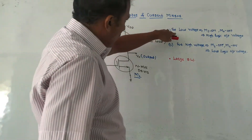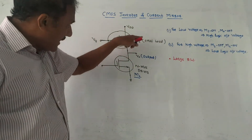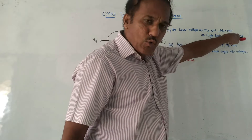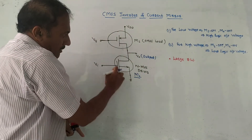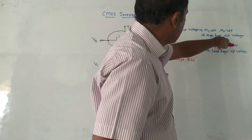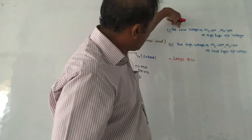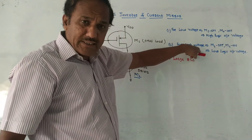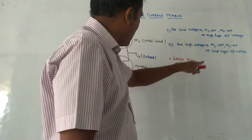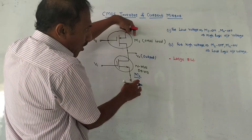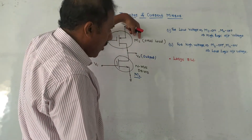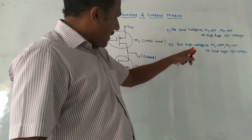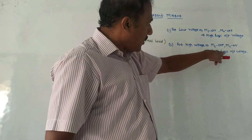For low voltage at the input, M1 (the PMOS load) will be ON and M2 (the driver MOSFET) will be OFF, so high logic output voltage is generated. Conversely, for high voltage at the input, M1 will be OFF and M2 will be ON, so low logic output voltage is generated at the output.